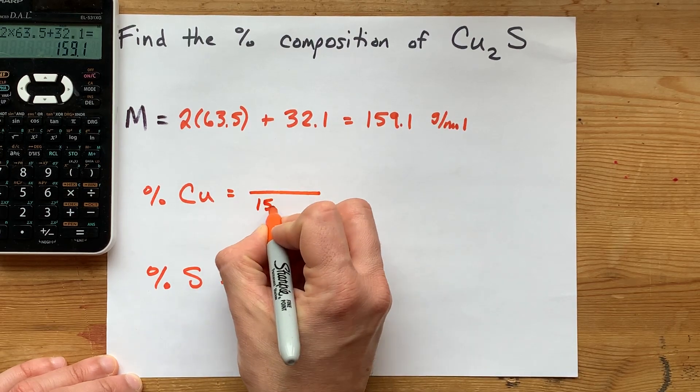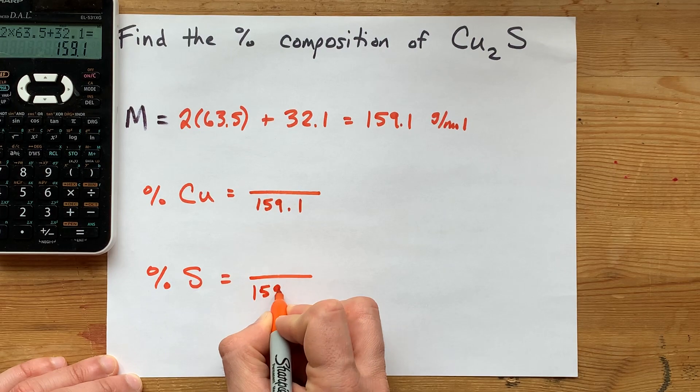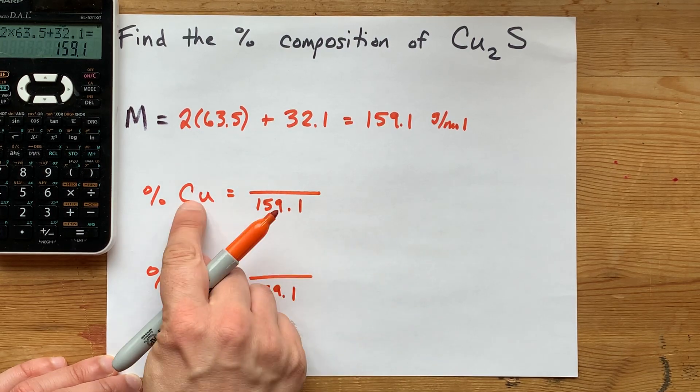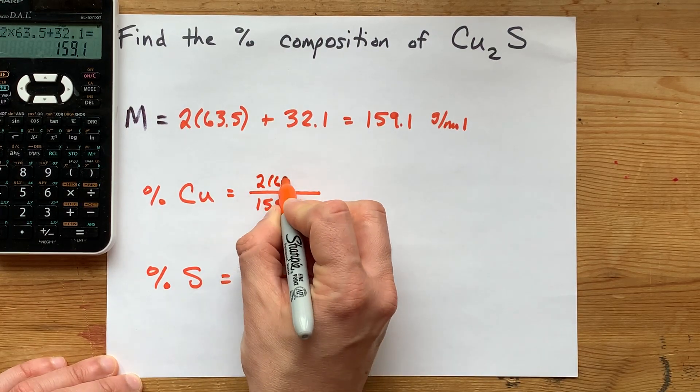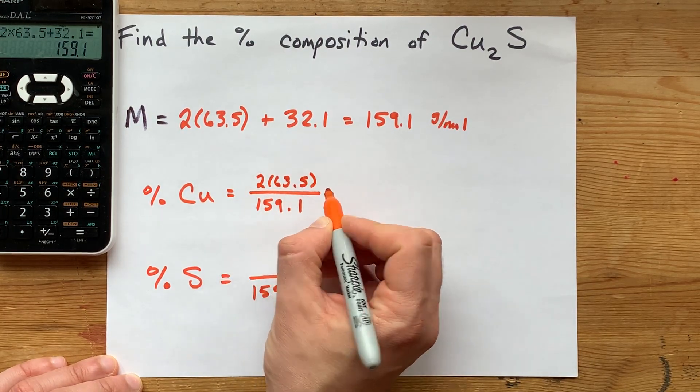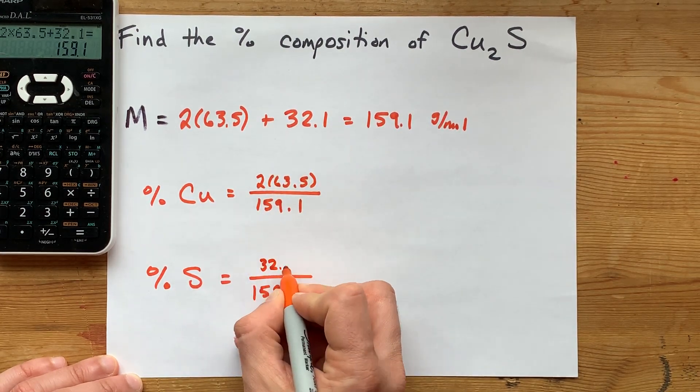And out of the 159.1, the question is how much of that was copper? Well, it was this chunk here, the two 63.5s. And how much of it was sulfur? Well, it was that one, 32.1.